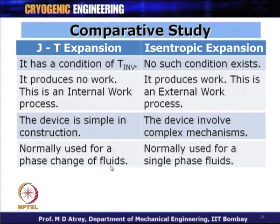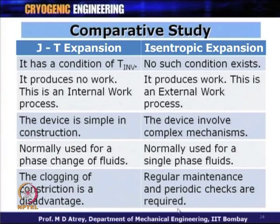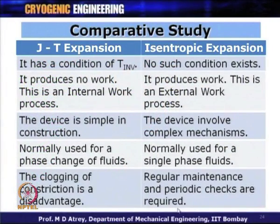JT expansion is normally used for phase change of fluids — working with real gas — so we prefer phase change during expansion. Isentropic expansion should work with single-phase fluid, as two-phase fluid is not acceptable to turbo expanders or reciprocating expanders. JT valve constriction can clog with dust or particles, while isentropic devices require regular maintenance, periodic checks, and lubrication.